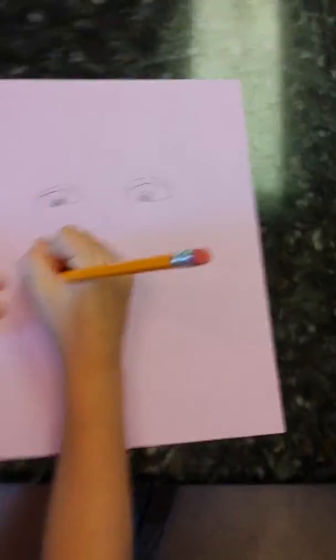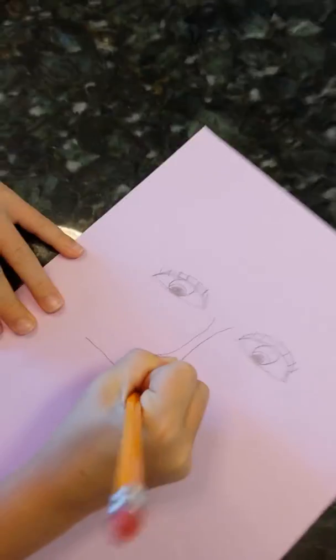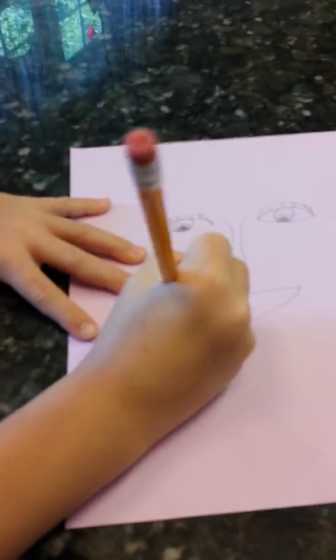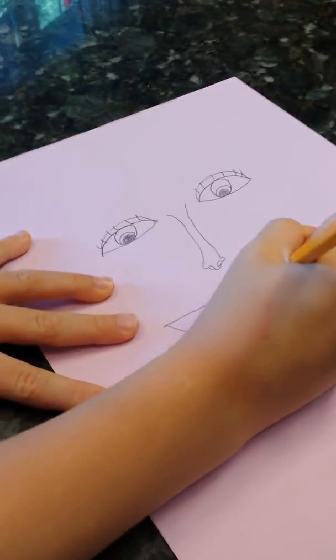Then for the lips, we're going to add a straight line and then little bumps like that. Straight line again. Then draw the bottom and add a little smile.